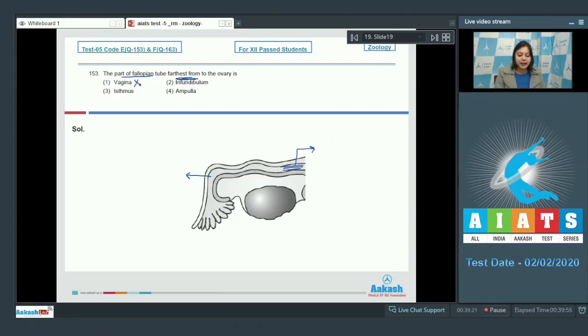Number 1. Vagina is incorrect as vagina is not a part of the fallopian tube. It is a part of the birth canal and is the part where semen is deposited during sexual intercourse.